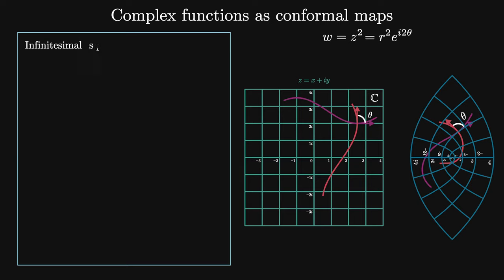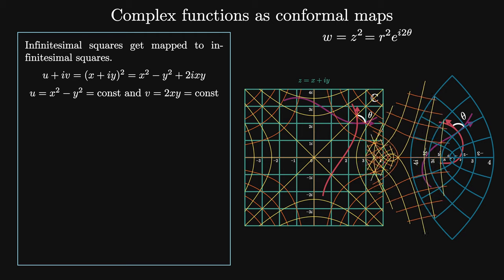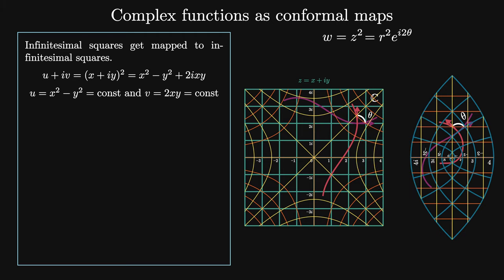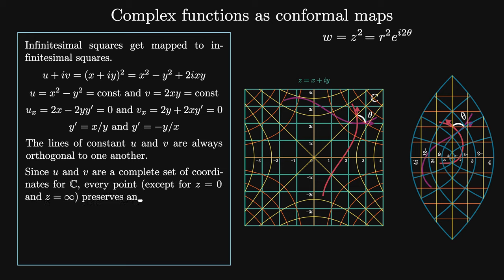Let's show analytically that infinitesimal squares get mapped to infinitesimal squares. The map z goes to z squared can be written in Cartesian coordinates as u plus iv equals x plus iy squared, which equals x squared minus y squared plus 2i xy. Looking at the families of curves u equals constant and v equals constant, which form a basis for the image complex plane, we consider their implicit derivatives: ux = 2x − 2y·y′ = 0 and vx = 2y + 2x·y′ = 0. Thus the slope for the curve of constant u is y′ = x/y, and for constant v is y′ = −y/x. These are always orthogonal, so every point except z = 0 and z = ∞ preserves angles under z → z².